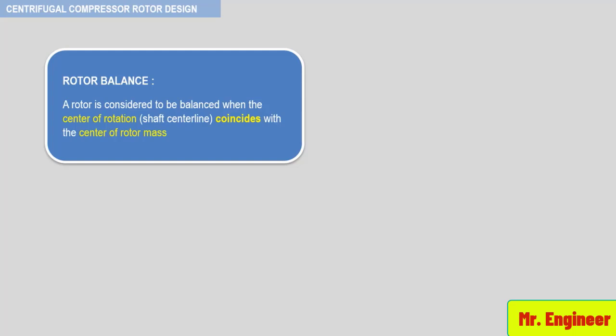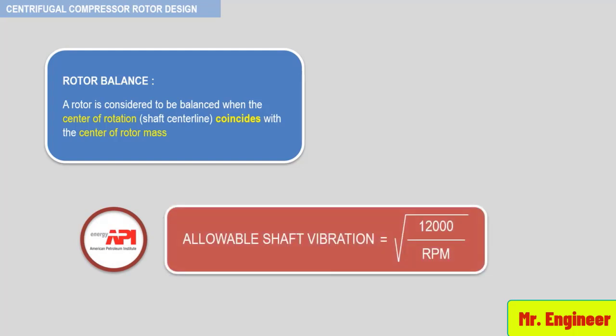The most common criteria for allowable shaft vibration during vendor test is defined by the American Petroleum Institute, API, as follows. Here, RPM is the maximum continuous speed. Examples of allowable shaft vibration are seen in this table.